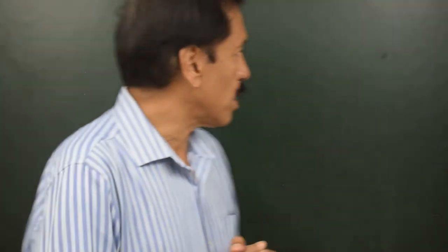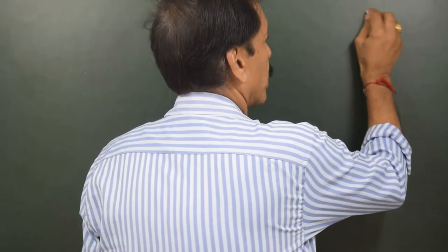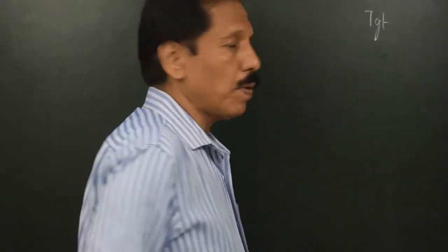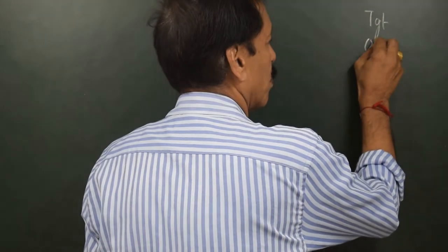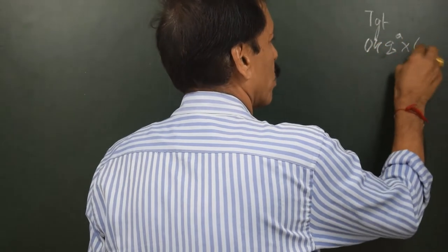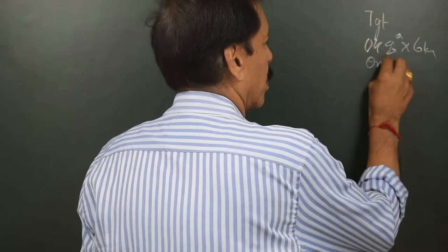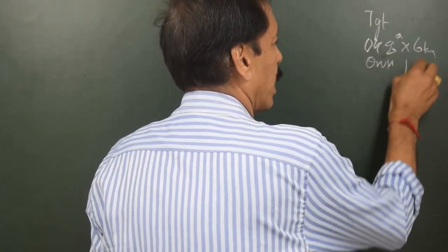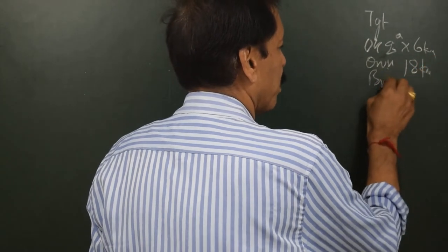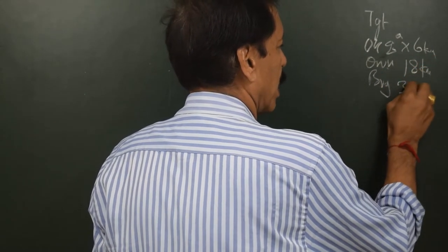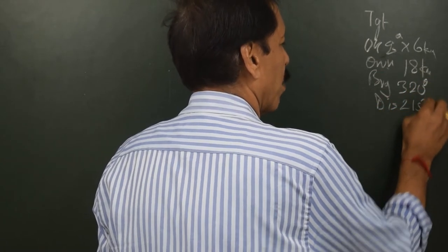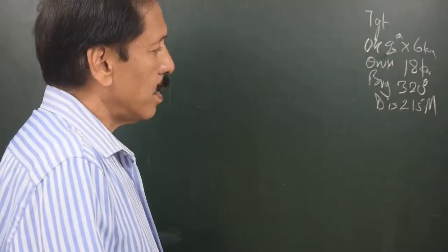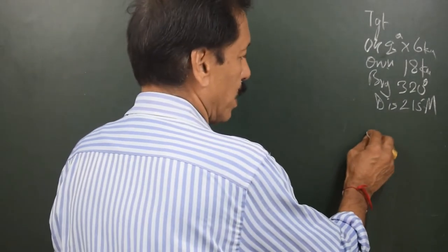Let us say there is a similar problem. A target which is disabled is going on a course of 048 degrees at 6 knots, and own speed can be 18 knots. The bearing of the target is 320 degrees and distance is 21.5 miles.